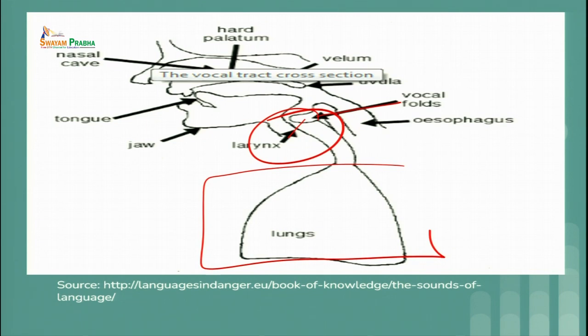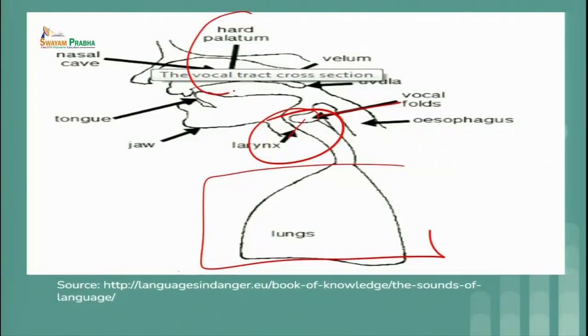Sometimes the vibrations are heavy enough that you can feel them, and sometimes they are minimal or partial. As shown in the diagram, vocal folds are inside the larynx and are put into vibration when air is released from the lungs. Moving to the roof of the mouth: first, behind your teeth there is an area called the alveolar ridge. After the alveolar ridge, if you touch the tip of your tongue to the roof just behind it, you will find the hard palate. The hard palate is followed by the soft palate, also called the velum.